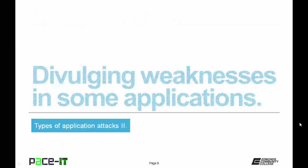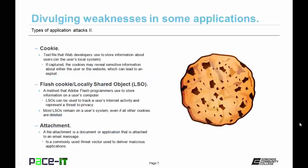It's time to move on to divulging weaknesses in some applications. First up is the cookie. Cookies are text files that web developers use to store information about users. These are stored on the user's local machine. If the cookie is captured, it may reveal sensitive information about either the user or the website, which can lead to a future exploit.